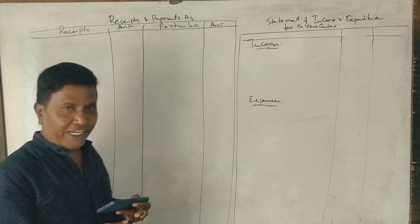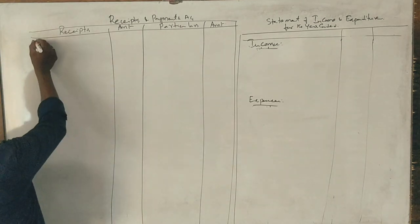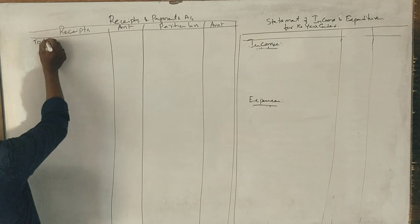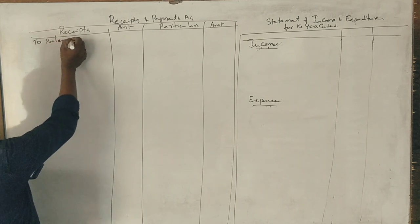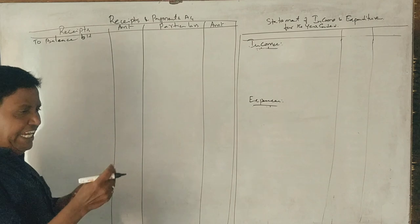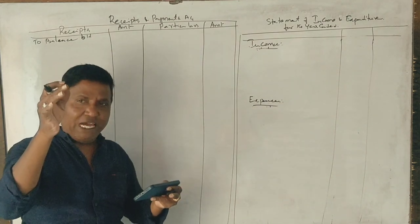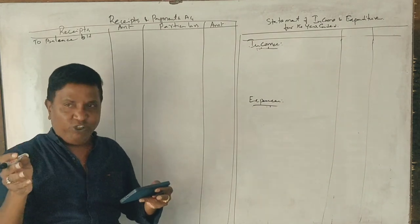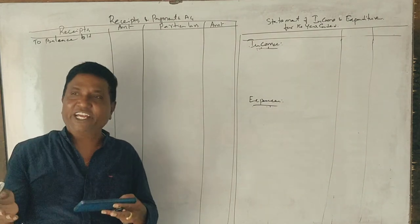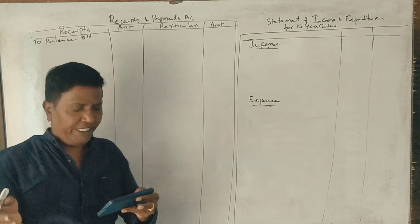We have the opening balance of cash, that is the balance brought down — which is the closing balance of cash, which becomes the opening balance of cash.